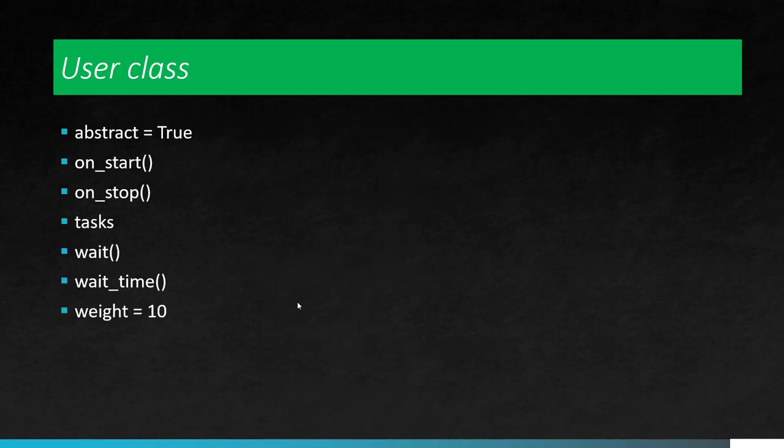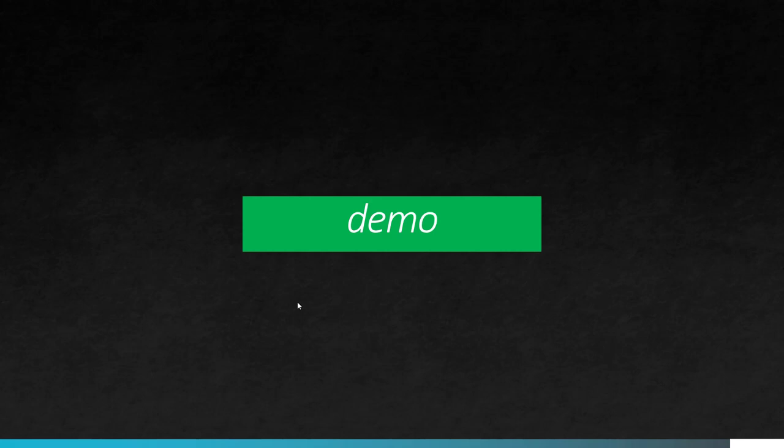Inside the user class, you can make use of these variables and methods so that you can achieve your test. Here you can define whether the class needs to be abstract or not. On start and on stop will help you define when you want to execute — whether at the start of the instantiation of the class or at the stop. And tasks is nothing but a list where you send the list of objects — basically task one, two, three, etc. And we have wait, wait time, and wait equals. These are the commonly used functions and variables inside the user class. We are going to deep dive into these in upcoming videos, but now let us see a quick demo of how you can leverage the user class in Locust.